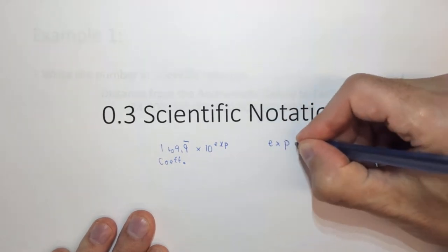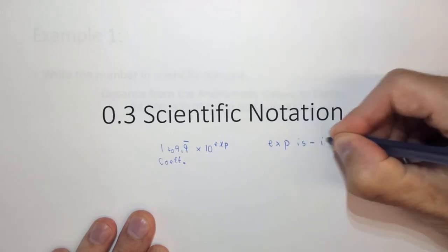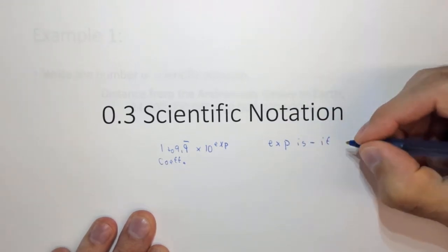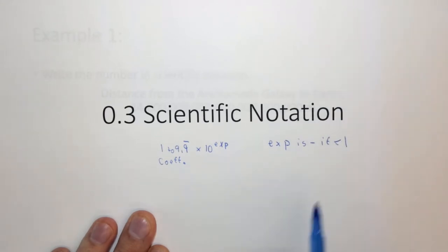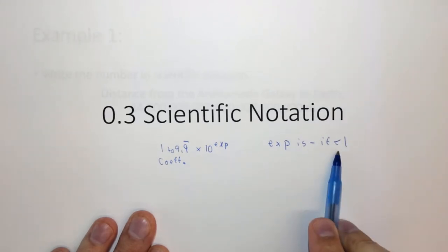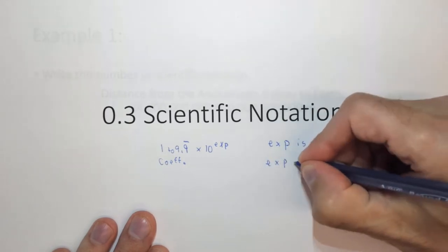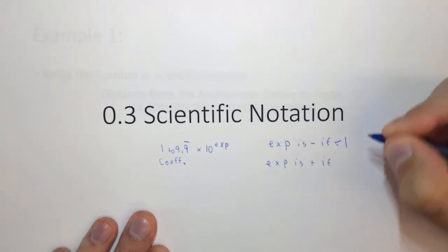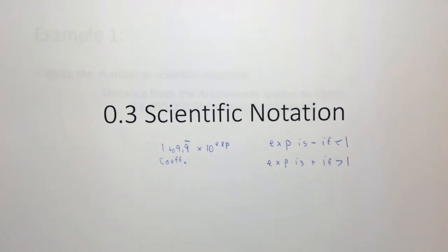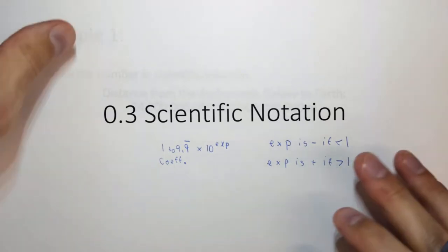The exponent is negative if the number is less than 1, and the exponent is positive if the original number is greater than 1. Scientific notation is used, as you will see in the several examples we're doing, in order to write very large and very small numbers without having to write out a whole bunch of zeros.